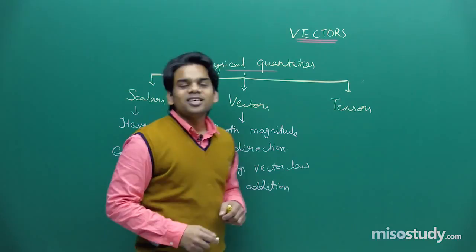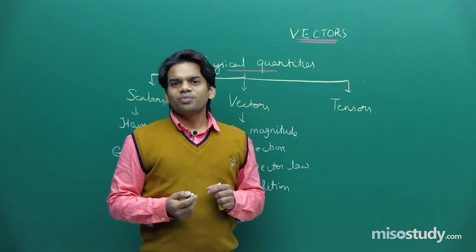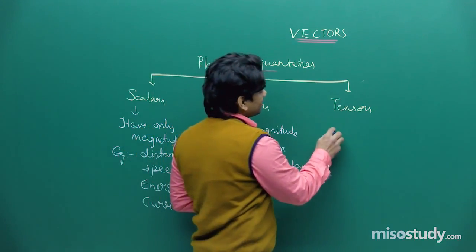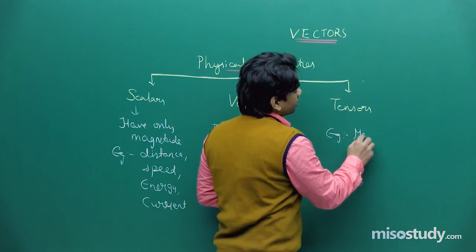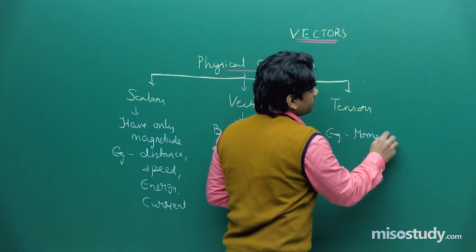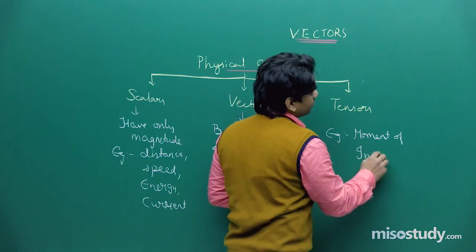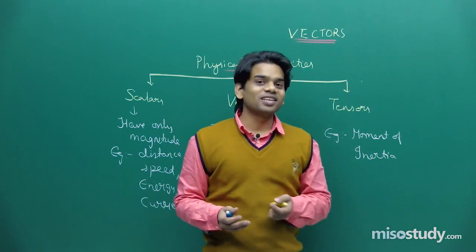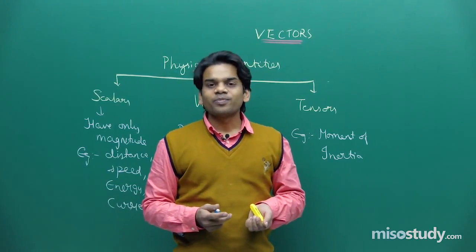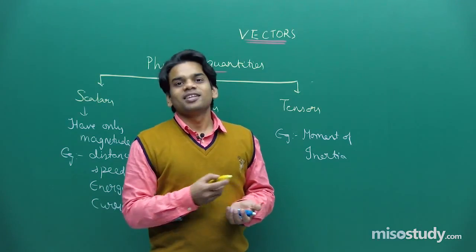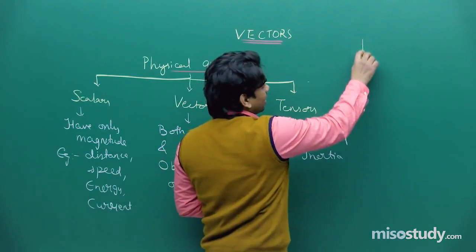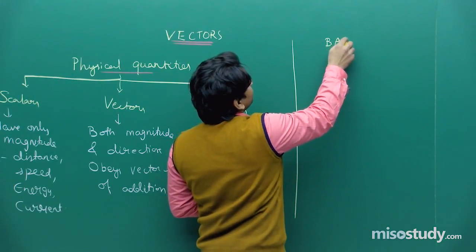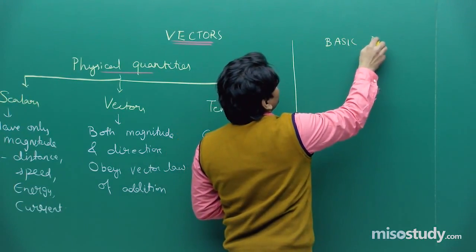There are some quantities which have magnitude but it is very difficult to give them a direction. Such quantities are tensors. An example is moment of inertia — it has a value but you cannot physically show it has a direction. Today our main focus is to understand vectors, so let's see some basic things we should know about vectors.